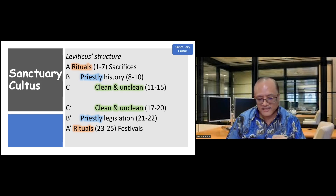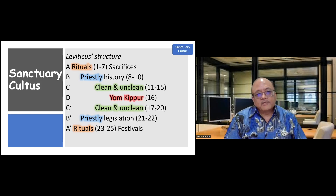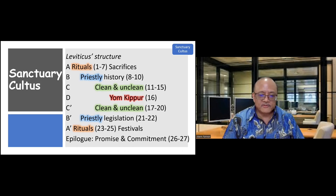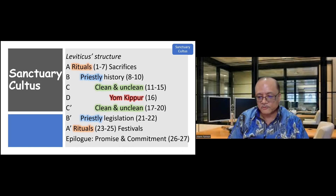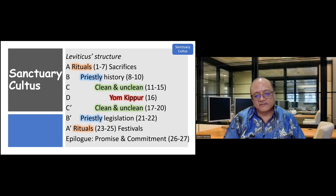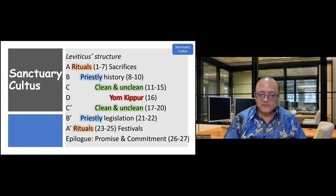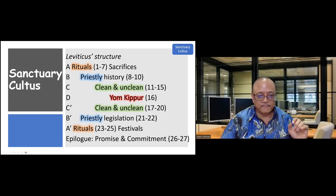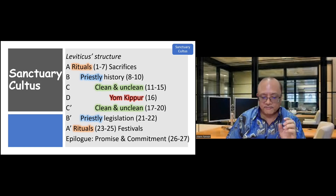This structure is called a chiastic or concentric structure, and the centerpiece is the one that matters. The centerpiece of Leviticus, with no parallel lines, is Yom Kippur — the Day of Atonement. There are two focal points in the life of Israel: the rituals, specifically the sacrifices, and Yom Kippur. All other materials are important, but these two help us understand the religion of the sanctuary.